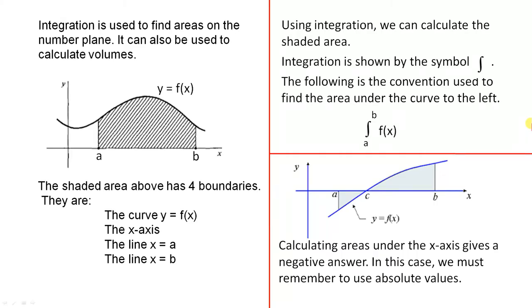Integration is used to find areas on the number plane. It can also be used to calculate volumes. Here we have a curve, y equals f(x), and we have this shaded area. The shaded area has four boundaries: the curve y equals f(x), the x-axis, the line x equals a, and the line x equals b.